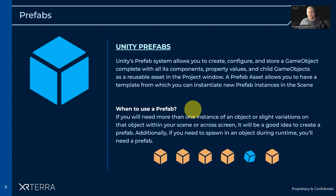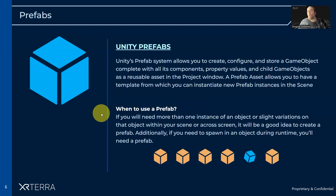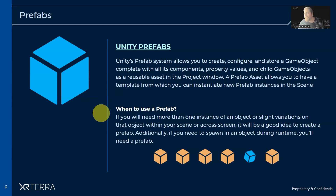The prefab asset basically functions as a template. When you think you're going to need more than one instance of an object, or if you want to have a whole bunch of slight variations on an object within your scene — such as, for example, you might have a prefab for a tree, and you just put a bunch of the same tree into your scene. It saves on optimization; maybe you just rotate them a little bit to make them not all look the same.